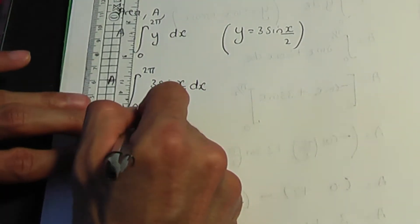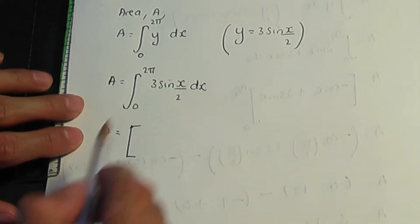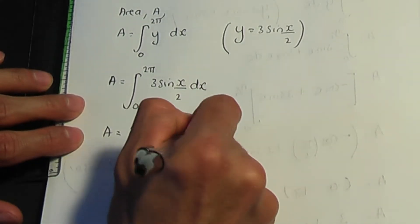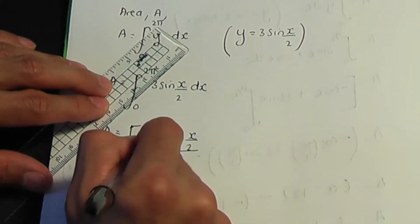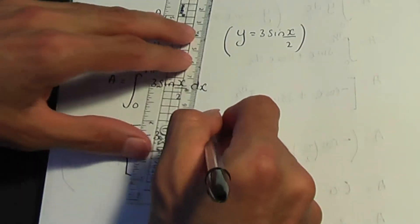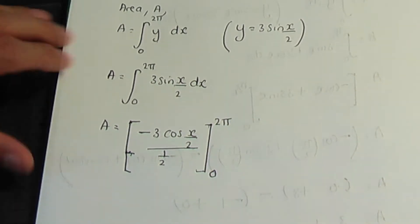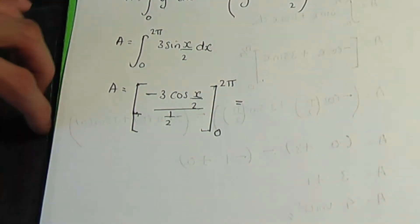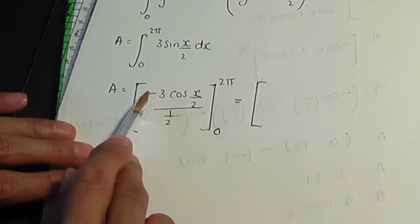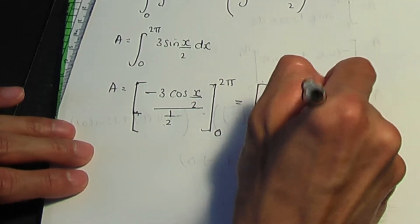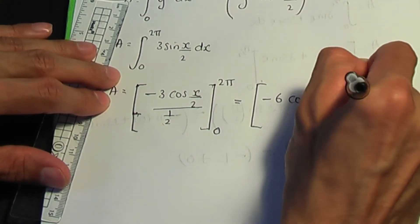We have a trigonometric function to integrate. Integrating sine gives minus cos, so we get minus 3 cos(x/2), but we need to divide by the inner derivative, which is one half — don't forget to do that. Dividing minus 3 by one half gives minus 6, so the result is minus 6 cos(x/2), evaluated between the limits zero and two pi.